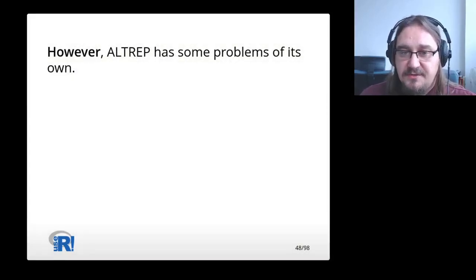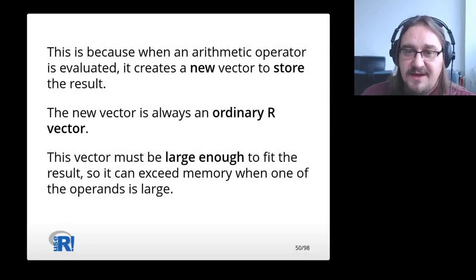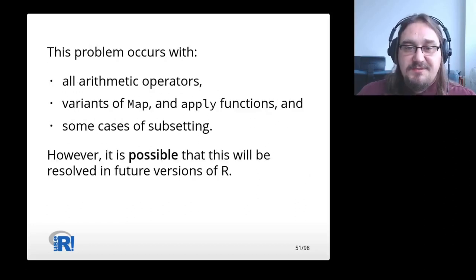However, Altrep has some problems of its own. There are certain operations that will not work. For instance, if you try to add 1 to the 1 billion integers vector, you will get an error. This is because when an arithmetic operator is evaluated, it creates a new vector to store the results. The new vector is always an ordinary R vector. This vector must be large enough to fit the result, so it can exceed memory when one of the operands is large. This problem occurs with all arithmetic operators, variants of map and apply functions, and some cases of subsetting. However, it is possible that this will be resolved in future versions of R. Let's hope.